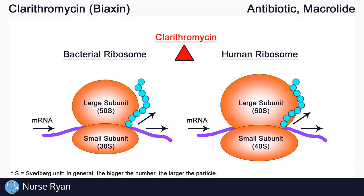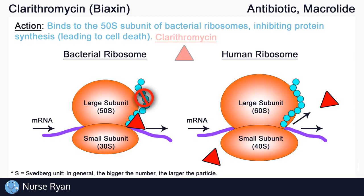Clarithromycin — shown here as little red triangles — happens to only target 50S subunits. Clarithromycin binds to the 50S subunits and interferes with their ability to synthesize proteins. This means that only bacterial ribosomes are affected, leaving human cells untouched. So one last time: clarithromycin enters bacterial cells, binds to the 50S subunit of the ribosomes, inhibiting protein synthesis, which eventually causes the bacteria to die. And that is how clarithromycin and macrolides in general work as antibiotics.